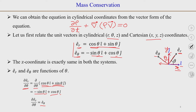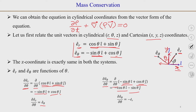Similarly, dou/dou theta of e_theta = dou/dou theta of (-sin(theta) i + cos(theta) j) = -cos(theta) i - sin(theta) j = -e_r. So dou e_theta / dou theta = -e_r. These two results will be used in the derivation.